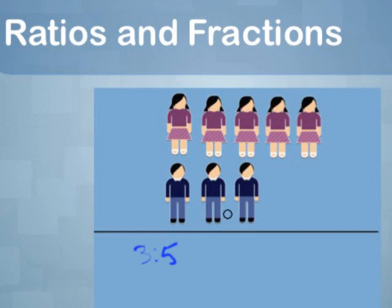The fraction of boys is 3 over the total, which is 8. So the fraction of boys is 3 eighths. And the fraction of girls is 5 over the total, or 5 eighths.